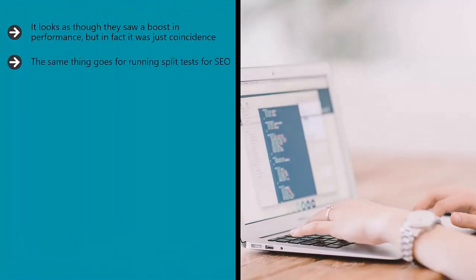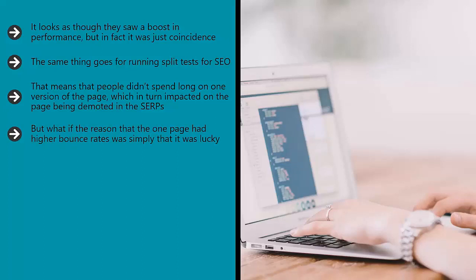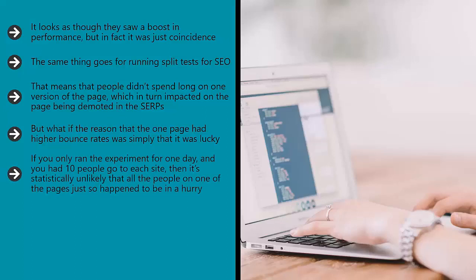The same thing goes for running split tests for SEO. If you have two versions of a website and one enjoys a bigger boost in SEO than the other, this could potentially be a result of one page having lower bounce rates than the other. That means that people didn't spend long on one version of the page, which in turn impacted on the page being demoted in the SERPs. But what if the reason that the one page had higher bounce rates was simply that it was lucky — that the people who went there happened to be in less of a hurry? If you only ran the experiment for one day and had 10 people go to each site, then it's statistically unlikely that all the people on one page just happened to be in a hurry, but it's not impossible.